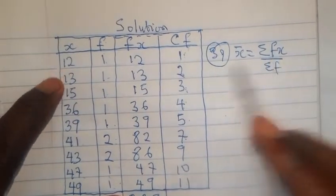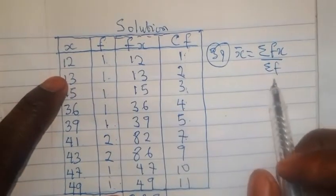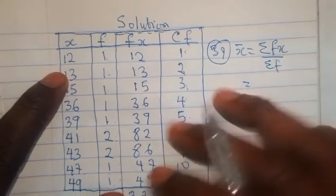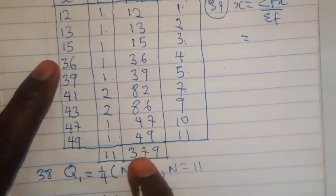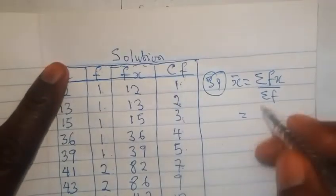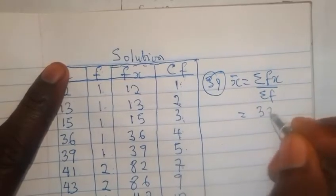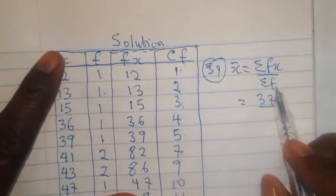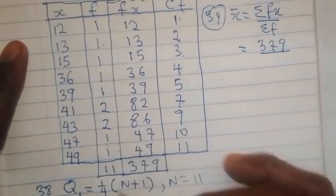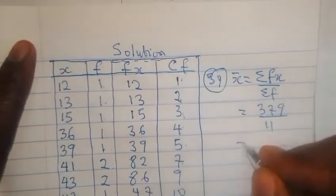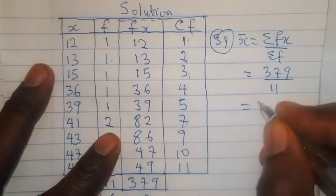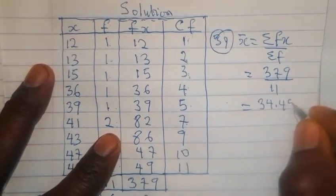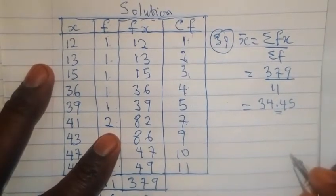So, this is the reason why we needed this, your F of X, because we use it to calculate the mean. So, now, what is the total F of X? We already know the value. The sum of all the F of X is 379. So, if we have 379 divided by the total value for the frequency. And the total value for the frequency is 11. So, if we do this division, we are going to have 34.45 as the final answer.